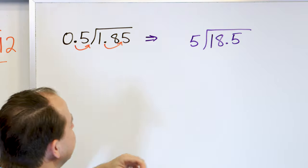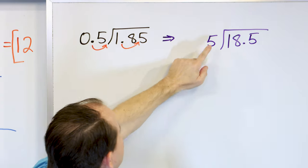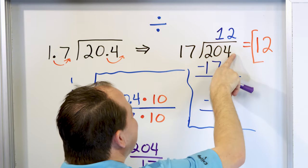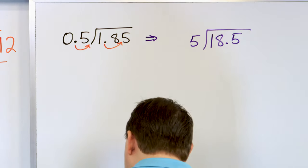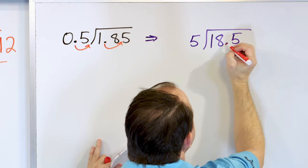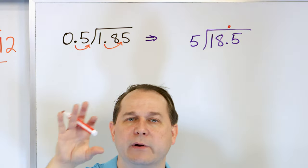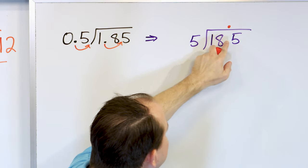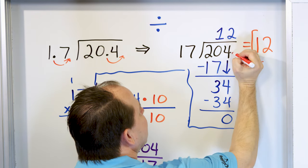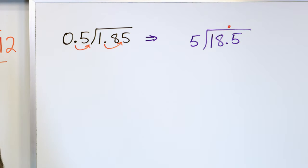What we want to do is move the outside decimal point one spot to the right, and then one spot to the right on the inside. That's like multiplying this by 10 and this by 10. So we're going to work a related problem: since we moved the decimal, it'll be 18.5 divided by 5. The zero won't matter at all. So we're solving 18.5 divided by 5. We want a whole number on the outside. Now we still have a decimal on the inside — that's okay. The decimal point in the answer just floats right above. You just look at where the decimal is and the final decimal is there.